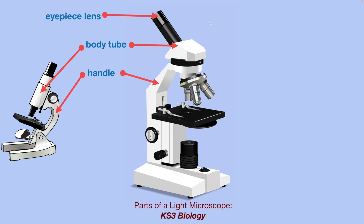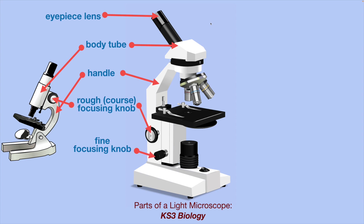Then we have the handle. There might be a question about how do you carry a light microscope — use the handle, of course. Then we have the rough focusing knob; this is going to make big changes when you're focusing. The microscope on the left has a rough or coarse focusing knob, but it does not have a fine focusing knob like the microscope on the right does. The fine focusing knob is going to make smaller changes in the movement and focusing of your microscope.